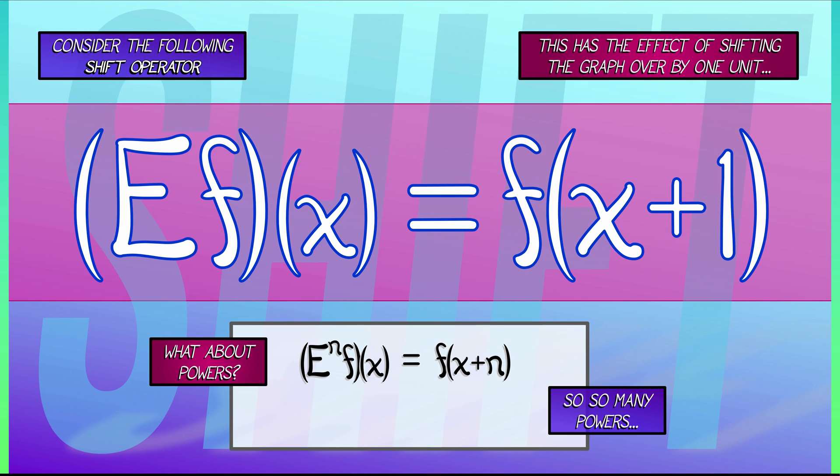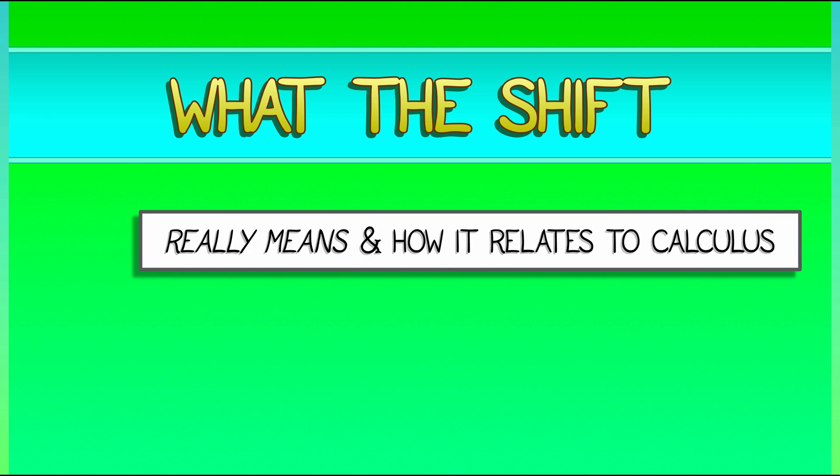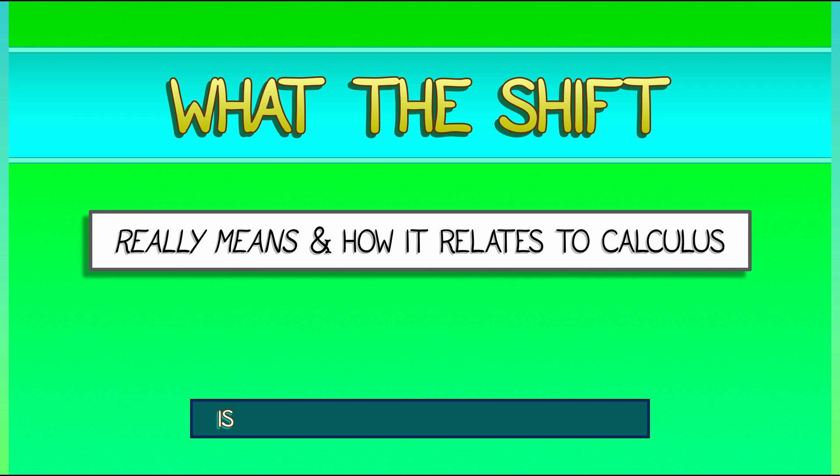We can take any kind of power we want. We can take E to the h for any real h. Apply that to f evaluated at x, we get f of x plus h. We've shifted over by that amount. Does that look familiar to you?